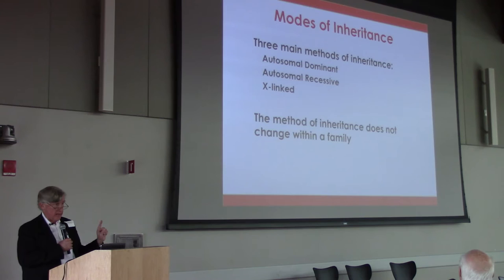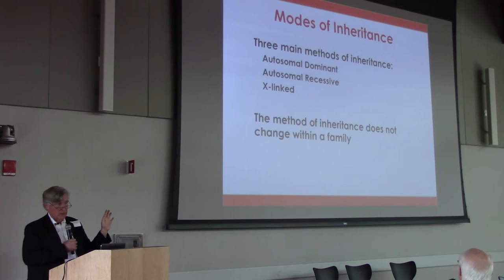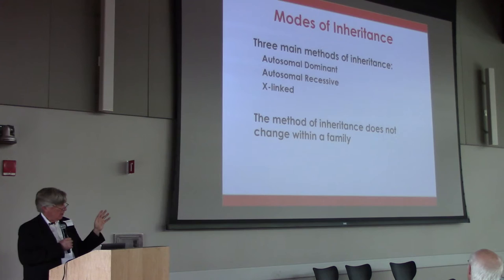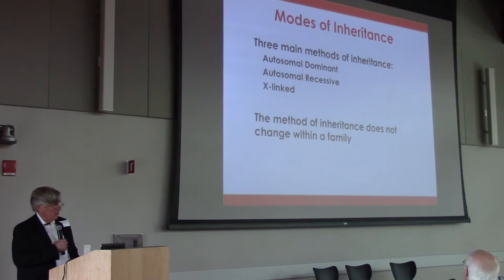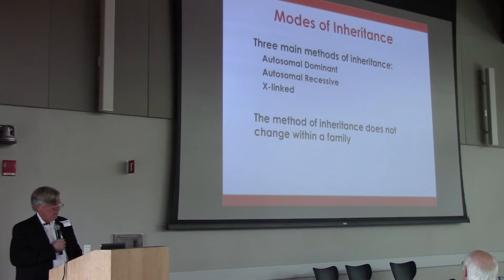Sporadic means it just appeared in one individual and is not going to affect anybody else in the family. We all get a few sporadic changes when we're created — a few changes that neither our mother nor father carried. But it can also be inherited dominantly, recessively, or X-linked.